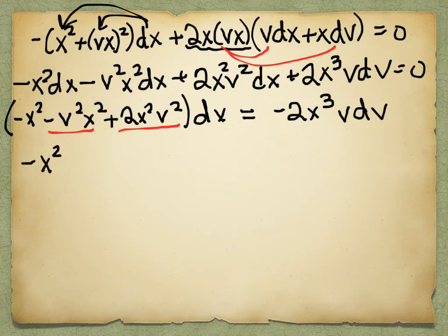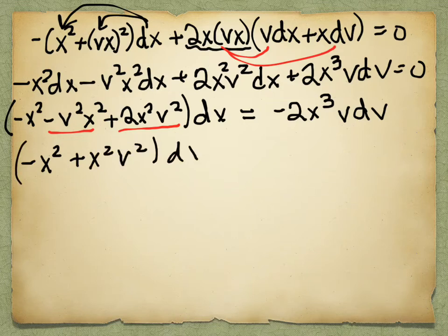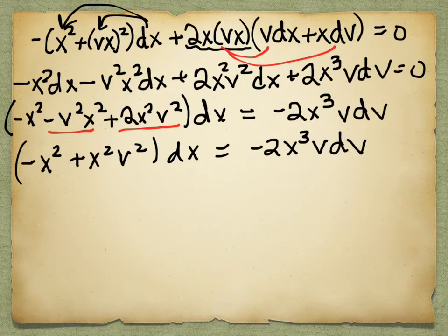Now we need to back-substitute. Our current answer has v's in it, but v was a substitution we made. Since y = vx, we have v = y/x. Replacing v² with (y/x)²: ln|x| = -ln|1 - (y/x)²| + c₁. We need to combine the expression inside the absolute value into one fraction. Distributing the square: 1 - y²/x² = (x² - y²)/x².